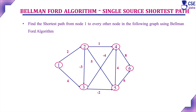Bellman-Ford algorithm is used to find the single source shortest path problem. One vertex is considered as the source vertex, and from that vertex to all other vertices in the given graph, we need to find the shortest path. Dijkstra's algorithm is also used for single source shortest path, but it cannot handle negative edges — it cannot find the shortest path if edges have negative weights. That limitation is overcome by Bellman-Ford algorithm, which can work with negative weights.